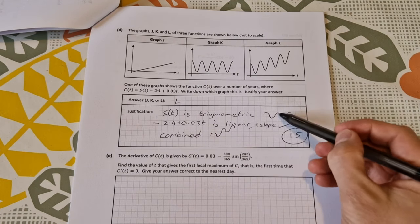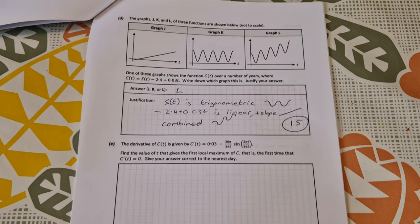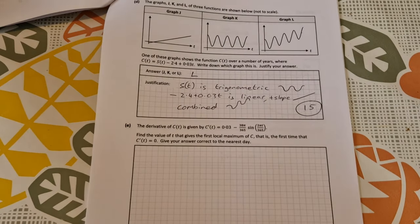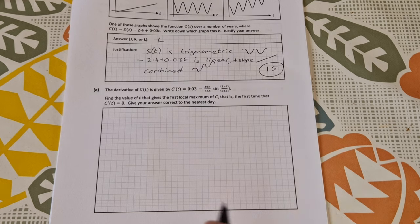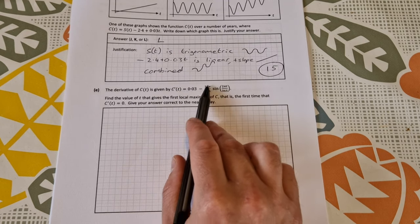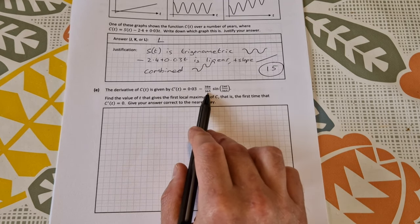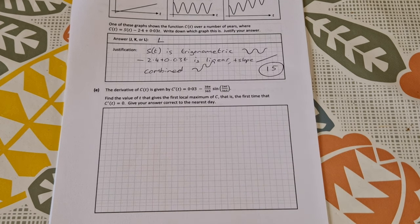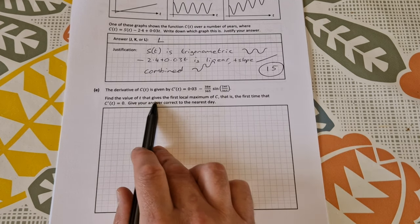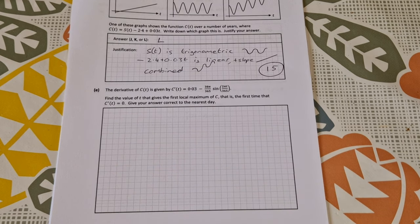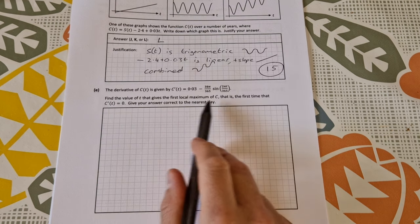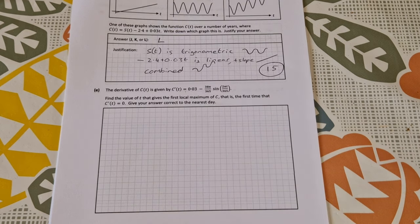Part e, the last part of this question. The derivative of c(t) is given by c'(t) equals 0.03 minus 38π over 365 sine(2πt over 365). Find the value of t that gives the first local maximum of c, that is the first time that c'(t) is equal to zero. Give your answer correct to the nearest day. They've given us c'(t), we just need to let it equal to zero and then solve for t.